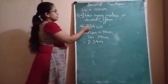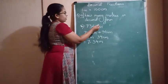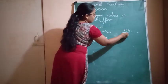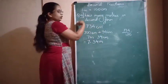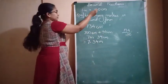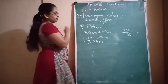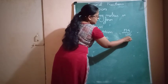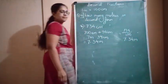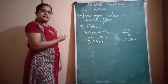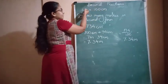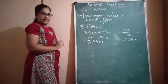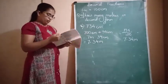Another way of thinking is: 734 divided by 100 — that is 734 upon 100 — because you are converting centimeters to meters, so you divide by 100. And 734 upon 100 is nothing but 7.34 meters. Either way you can understand this: either consider the conversion as dividing by 100, or split it up as we did before. It depends on which method you prefer.